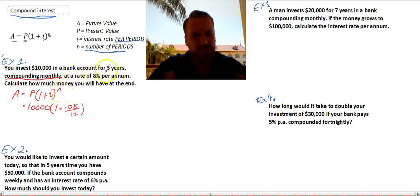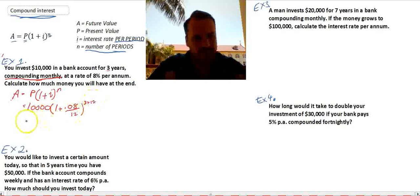And similarly, our number of periods. Now, you're investing for three years, but it's compounding monthly. So our number of periods is not three. It's three times 12, because there's 12 months in a year.